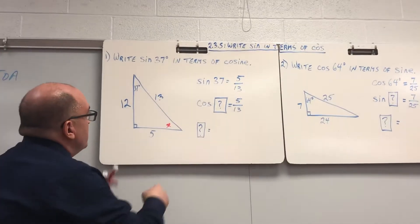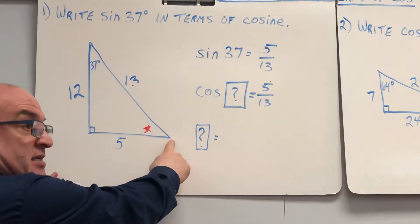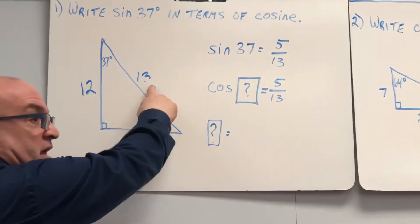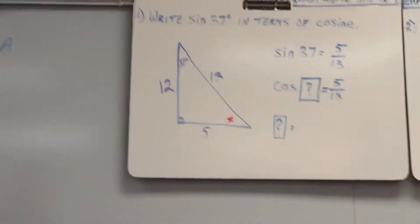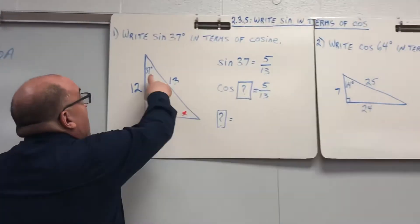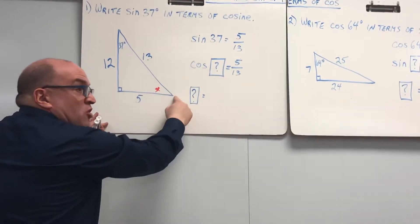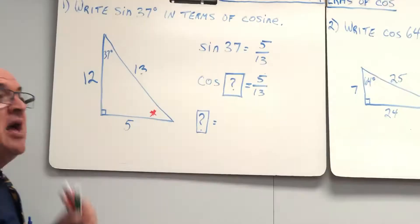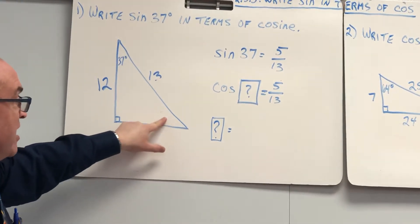Would you agree that if I was talking about this angle here, what's adjacent to this angle? 5. What's the hypotenuse? 13. That would make cosine — because cosine is adjacent over hypotenuse — meaning sine 5 over 13 is the same as cosine 5 over 13. But in order to do that, I need to know what the measure of this angle is.